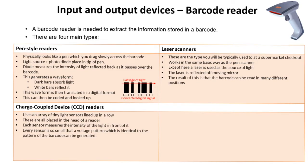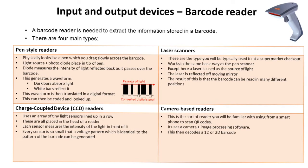Next we have CCD readers, or charged coupled devices. This is an array of tiny light sensors lined up in a row, placed in the head of a reader. Each sensor measures the intensity of the light directly in front of it, and because every sensor is so small, a voltage pattern can be worked out which is identical to the pattern of the barcode. Finally, we have camera-based readers — the sort you'll be familiar with from a smartphone when scanning QR codes. It uses the camera and image processing software to decode the information in the 1D or 2D barcode.